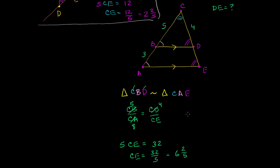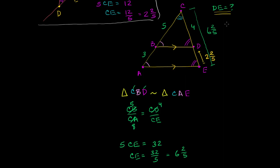We're not done, because they didn't ask for CE — they're asking for just DE. We know the entire length CE is 6 and 2-fifths. So DE is going to be CE minus CD, which is 6 and 2-fifths minus 4, giving us 2 and 2-fifths. DE is 2 and 2-fifths.